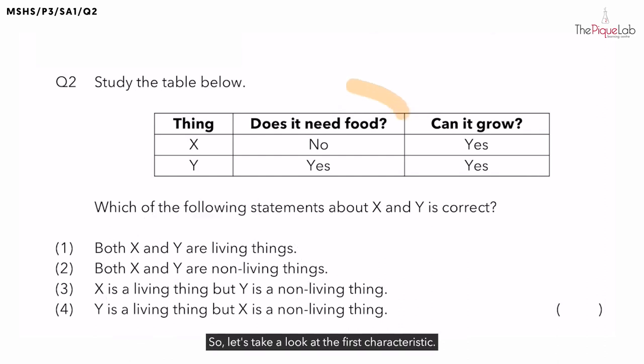Let's take a look at the first characteristic. The question is, does it need food? So, can you recall what kind of things need food? If you're thinking about living things, you're right. Living things need food to survive.